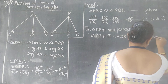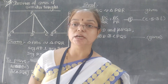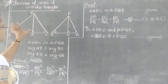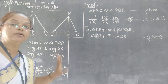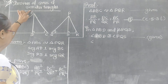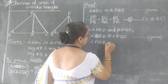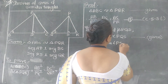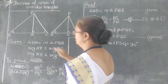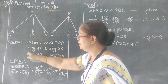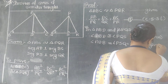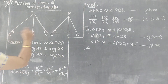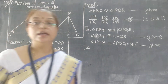Also, angle ADB equals angle PSQ equals 90°, because AD is perpendicular to BC and PS is perpendicular to QR — this is given. Therefore, these two triangles have two pairs of congruent angles, and by the AA test, triangle ABD is similar to triangle PQS.